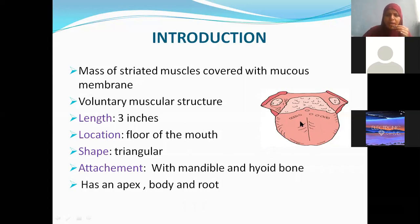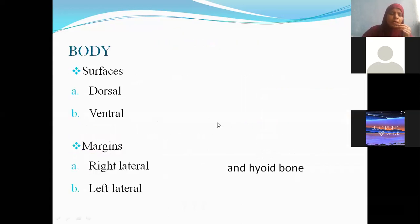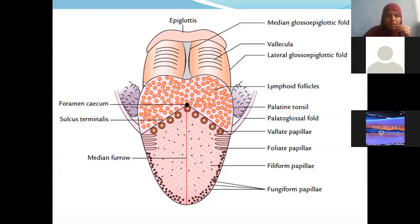So it has apex, body and root. Now coming to the surfaces, what are the surfaces I said? This is dorsum of the tongue. Below the dorsum whatever structure is there that is the ventral aspect. And it has two margins, the right and left lateral margin. Right lateral, left lateral. So this is Vishram Singh's picture. I want everybody to practice this diagram.